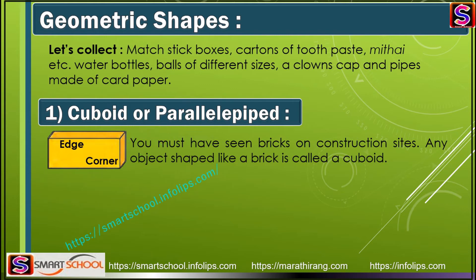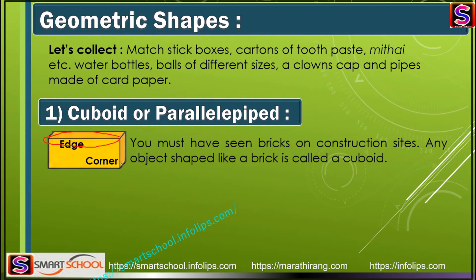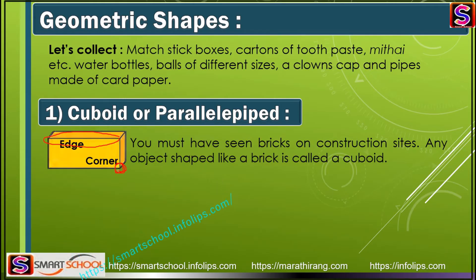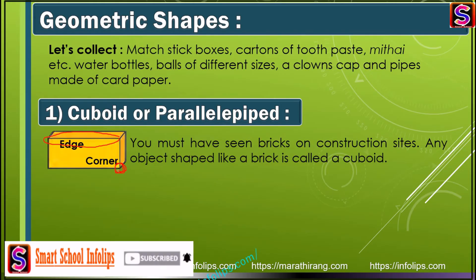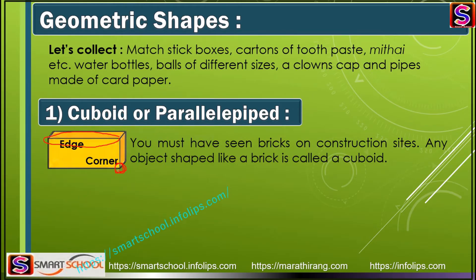The brick has two important part names. This part of the brick is called an edge. And this angle shape is called a corner. So a brick shape, or cuboid, has edges and corners.